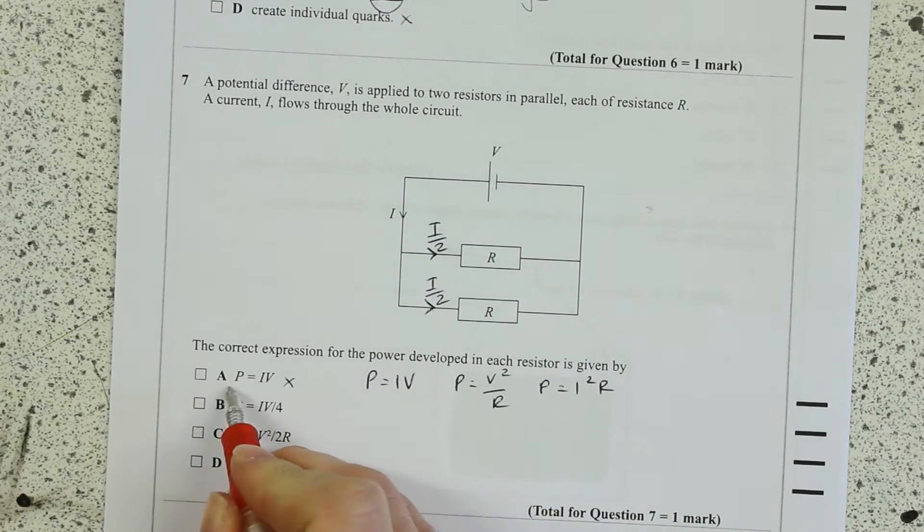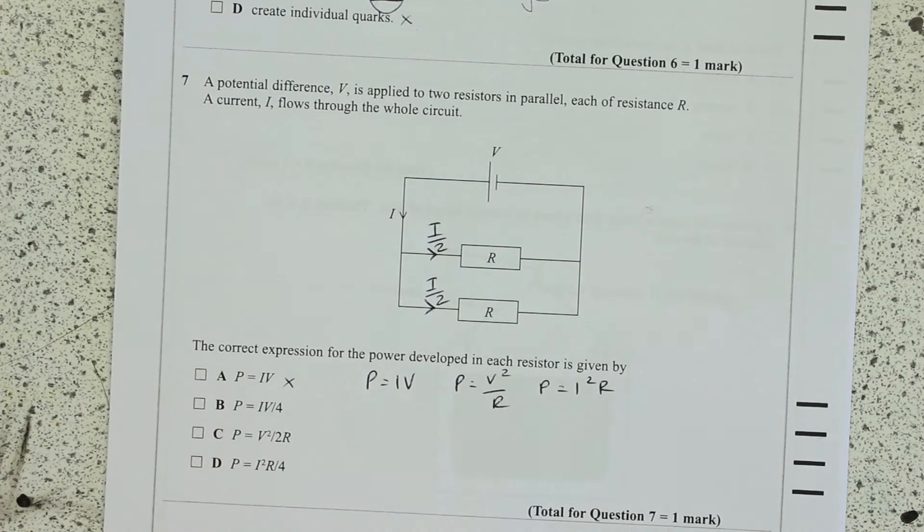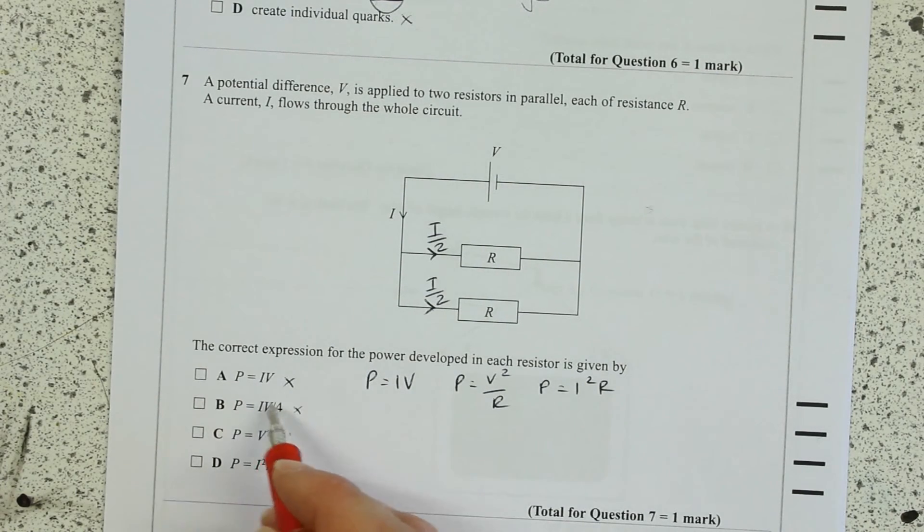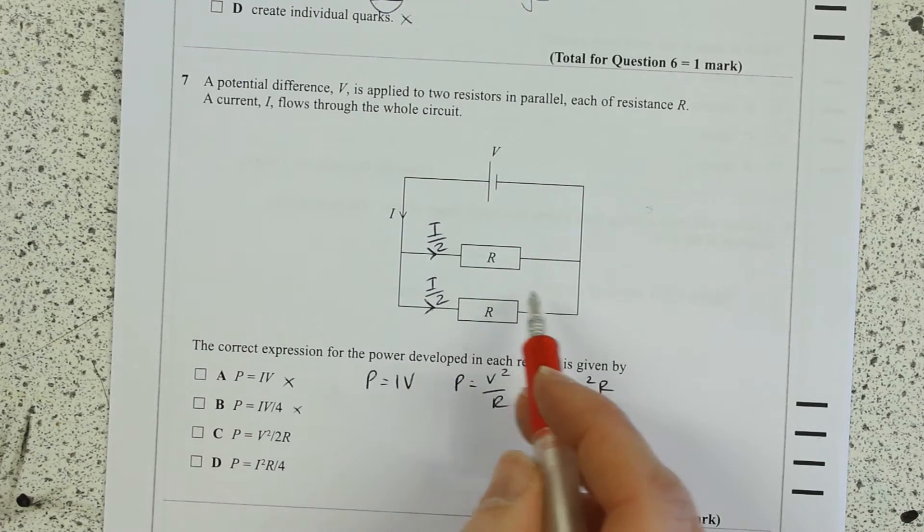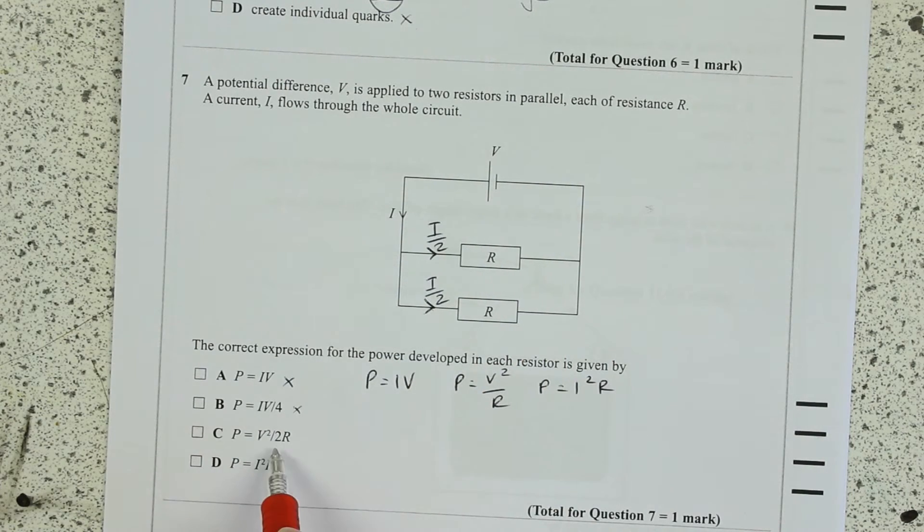Well it can't be that one because the P would be I over 2V. It can't be this one because it's not randomly going to be over 4 in an individual branch. Is it this one then?